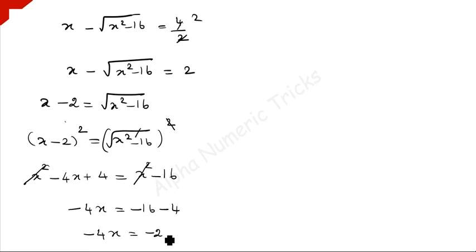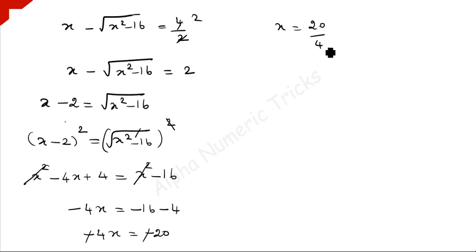The x squared terms get cancelled, giving x equal to 20 over 4, which is equal to 5.